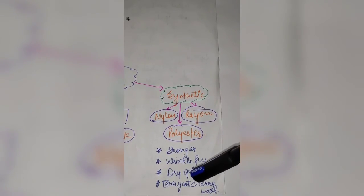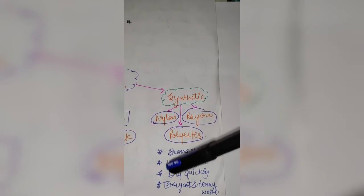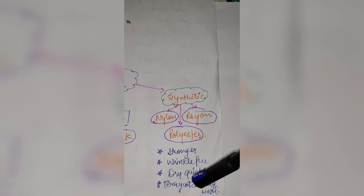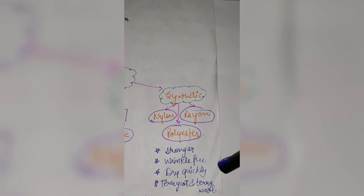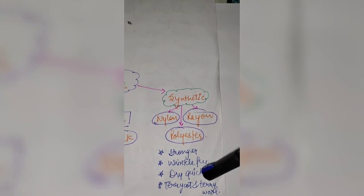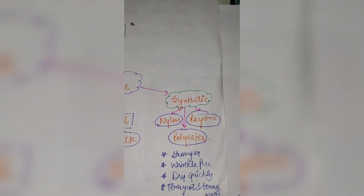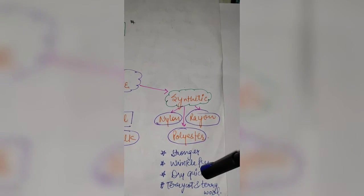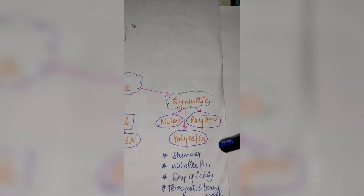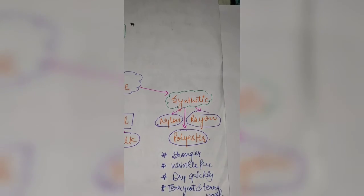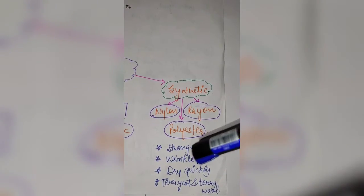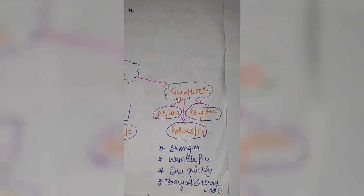Terricot is a blended fiber made of terrylene, which is a polyester, and cotton. Terry wool is another blended fiber made of terrylene, which is again a polyester, and wool. These blended fabrics are used to make clothes like kurta pajama and more. In this way synthetic fibers also preserve their importance in daily life.